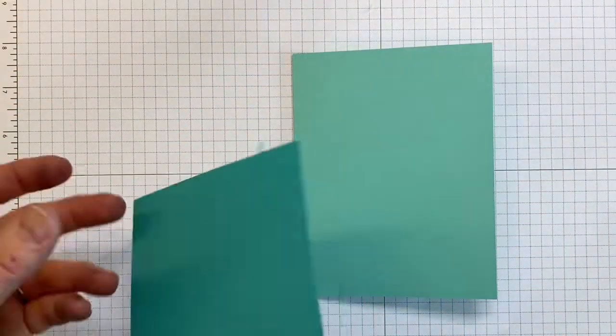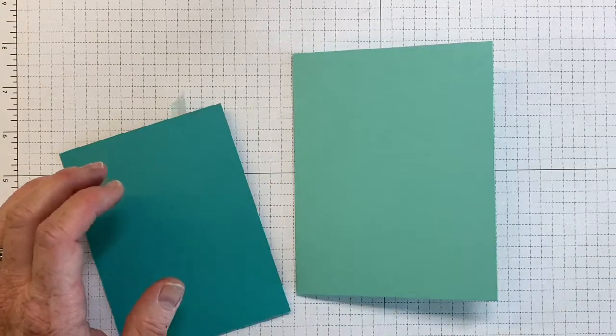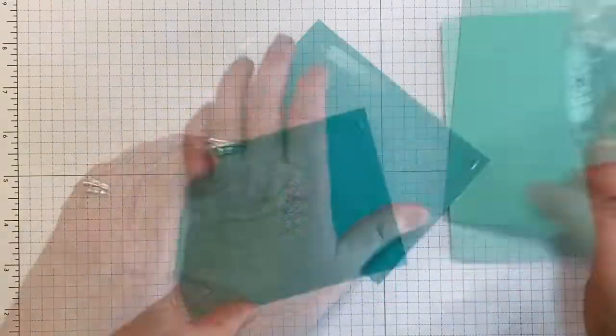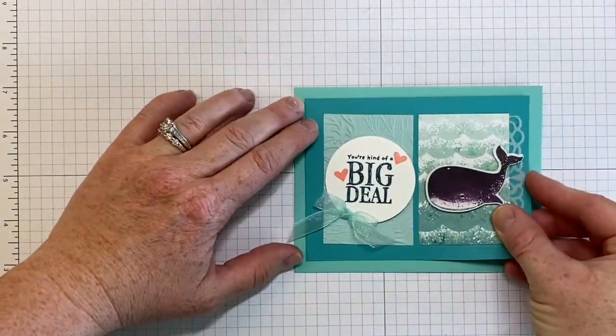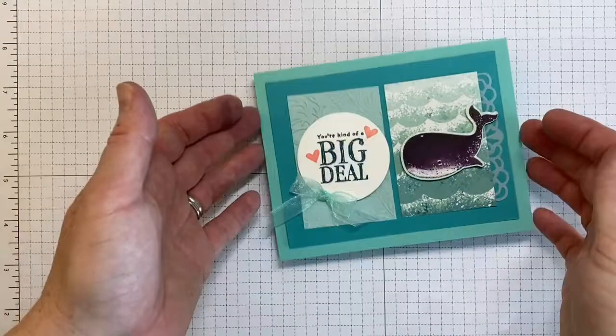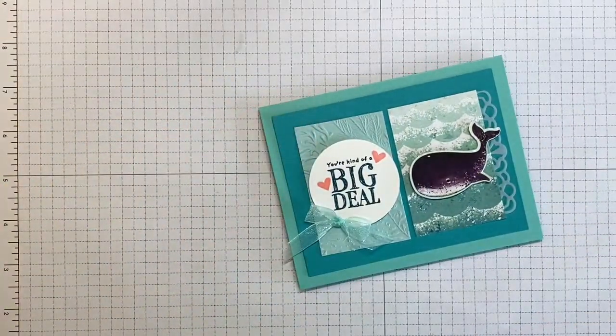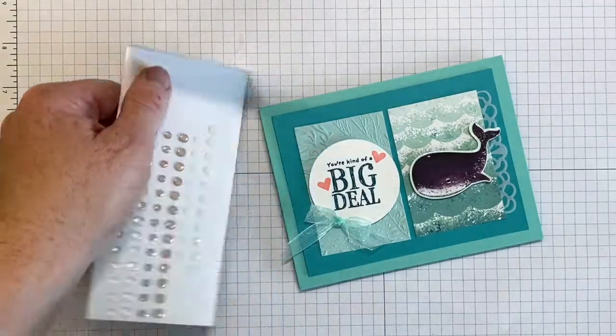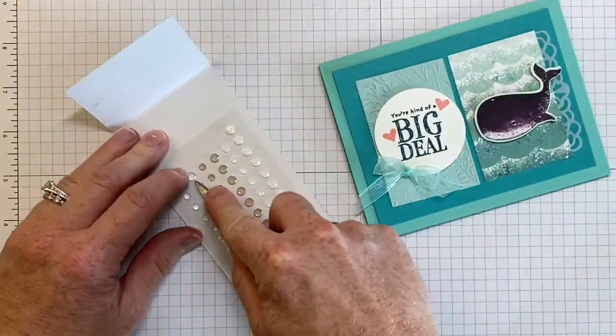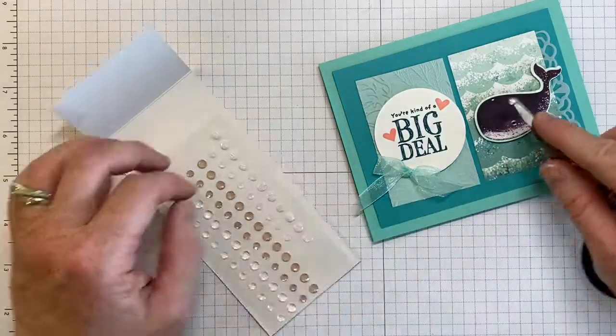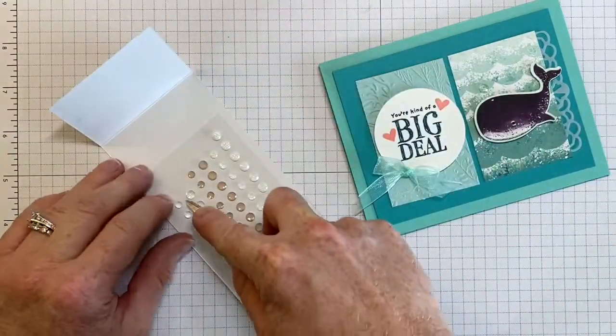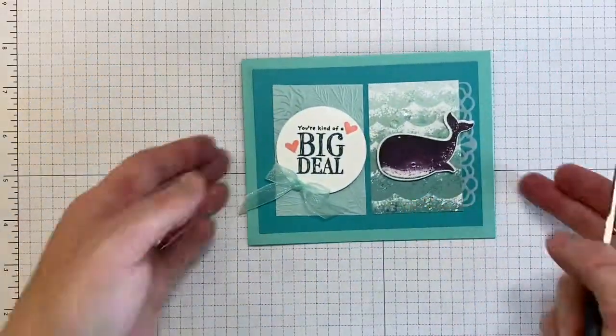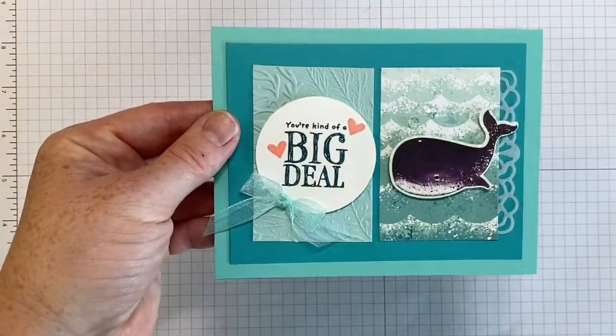And now we're going to use our Stampin' Seal to add the card front to the back. So there we've got our card front on it. The last piece is you're going to bring in the elegant faceted gems and you're going to take the clear ones and make it look like we've got a little bit of spray coming out from our whale. And there we have our finished card. Isn't that cute? Have fun!